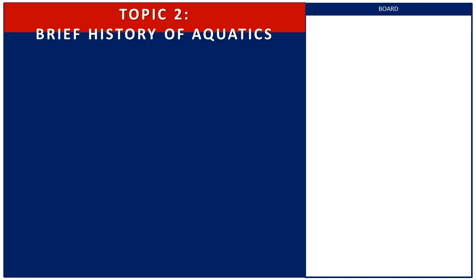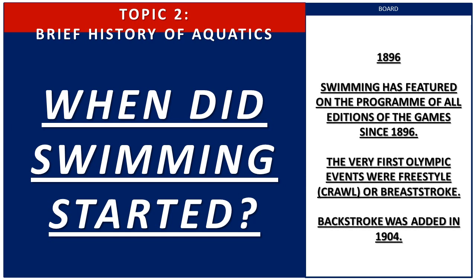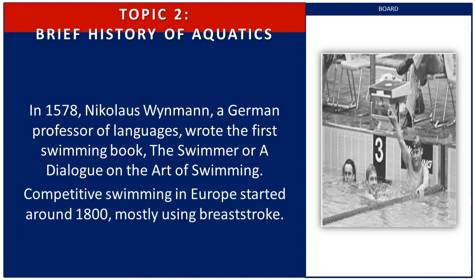Let us now move forward to Topic 2: the brief history of aquatics. When do you think did swimming start? It is the year 1896. Swimming has featured on the program of all editions of the Olympic Games since 1896. The very first Olympic events were freestyle, also called crawl, or breaststroke. Backstroke was added in 1904. In addition, in 1578, Nikolaus Winman, a German professor of languages, wrote the first swimming book, 'The Swimmer, or a Dialogue on the Art of Swimming.' Competitive swimming in Europe started around 1800, mostly using breaststroke.